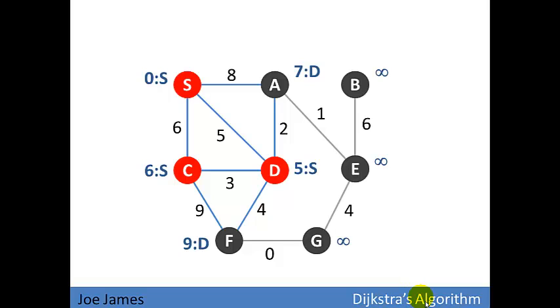The next nearest vertex to the source is A with a distance of 7. A has only one edge that we haven't seen yet. It gives us a distance of 8 to vertex E, so we update E's distance and the preceding vertex, which is A.